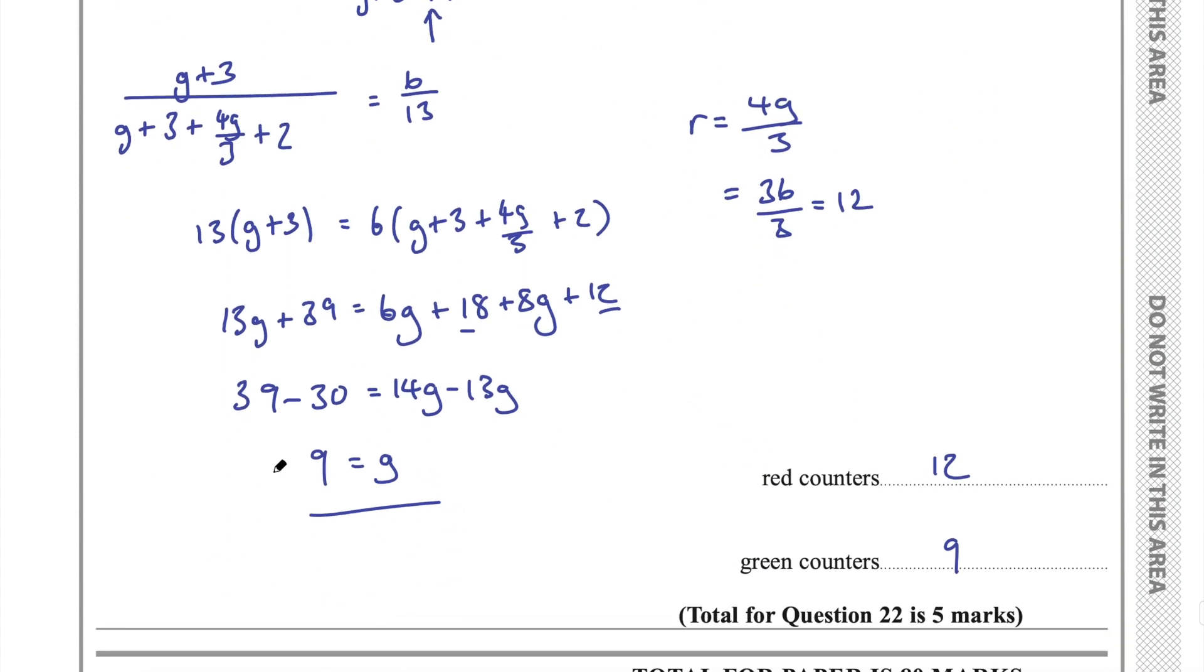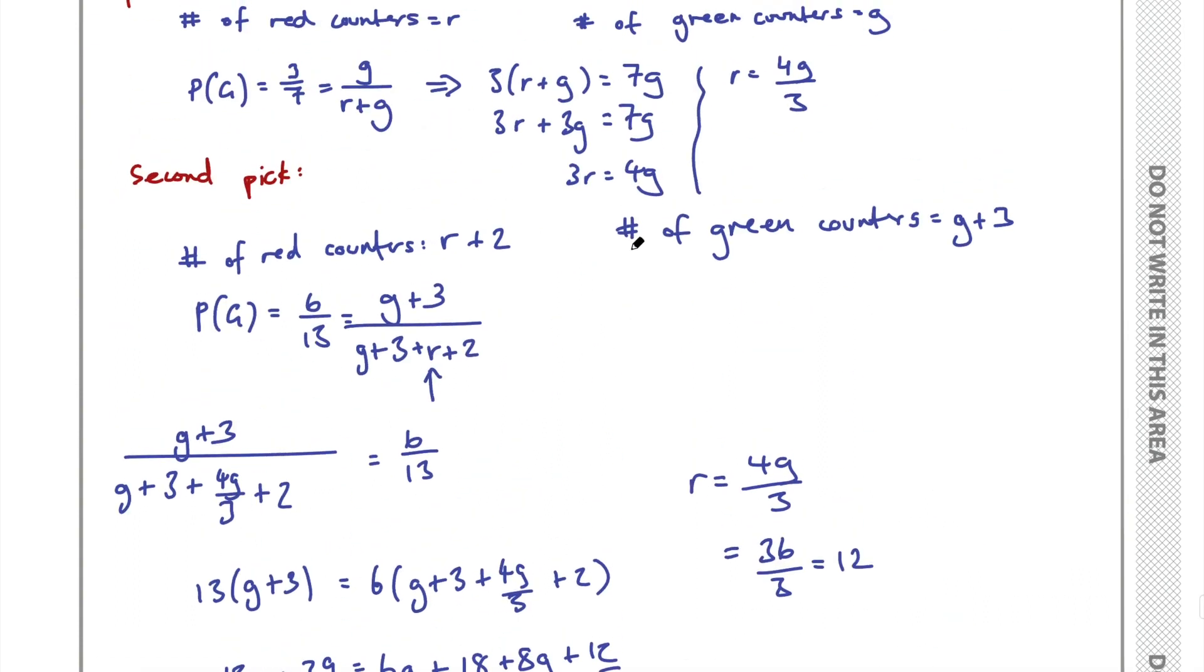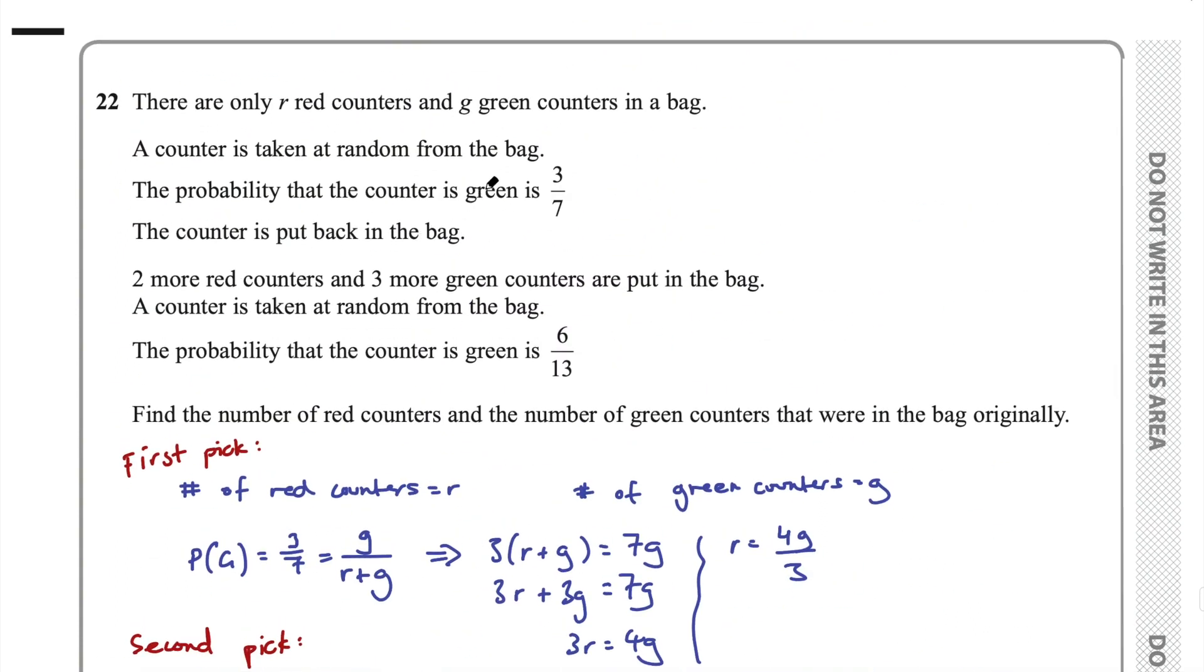Check you haven't made any kind of small errors in your working out. So if we go back to the start of this problem, they told us the probability of getting a green counter is 3 on 7. Well, what would that be with the numbers we worked out? That would be 9 on the total. 9 plus 12 is 21. So it would be 9 on 21. Does that simplify to 3 on 7? Well, if we divide by 3, yes, it does simplify to 3 on 7. So I'd be pretty confident once I got those numbers and I checked they fit with the question.